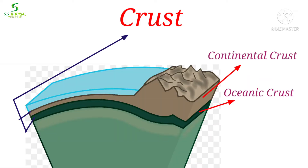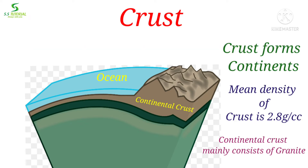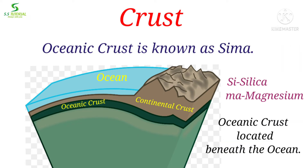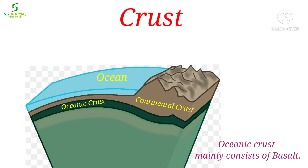The earth's crust is further divided into two sub-layers: continental crust and oceanic crust. Continental crust is also known as SIAL, as it is composed of silica and aluminium. It forms the continents, with an average density of 2.8 g per cubic centimetre, and mainly consists of granite, which is lighter in colour. Oceanic crust is also known as SIMA, as it is composed of silica and magnesium. It is located beneath the ocean, with an average density of 3 g per cubic centimetre, and mainly consists of basalt, which is dark in colour.